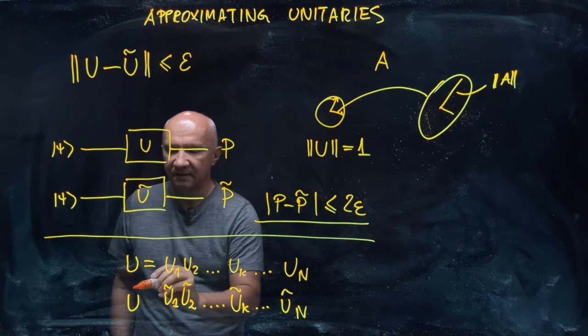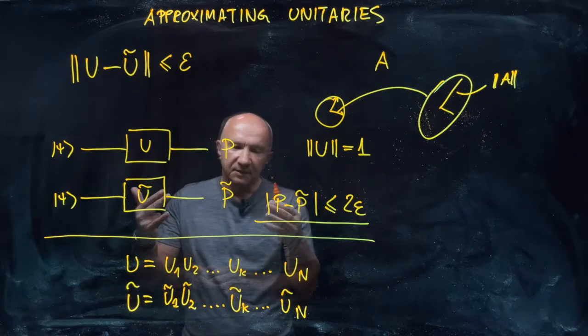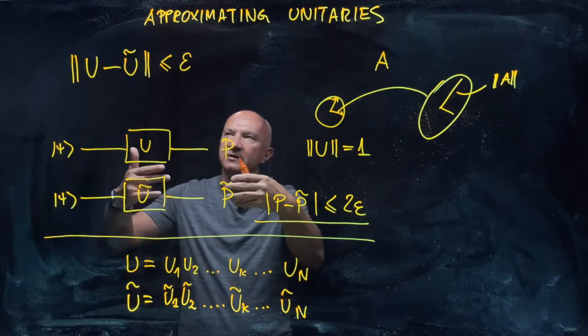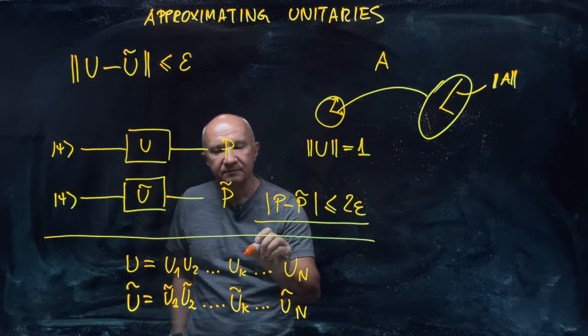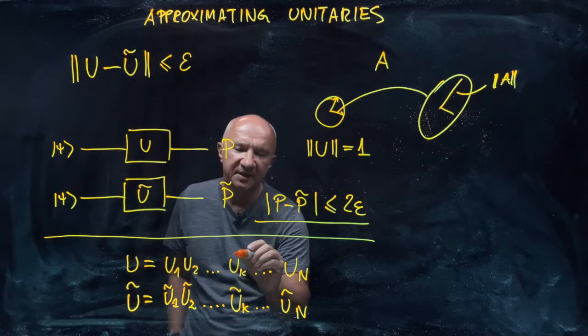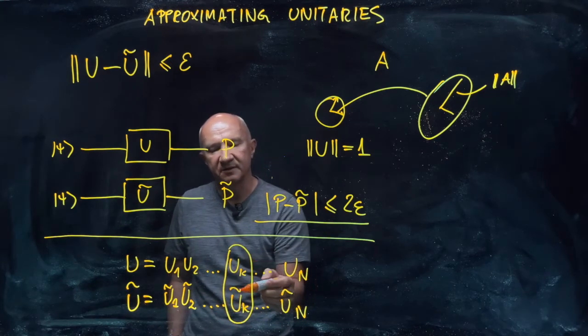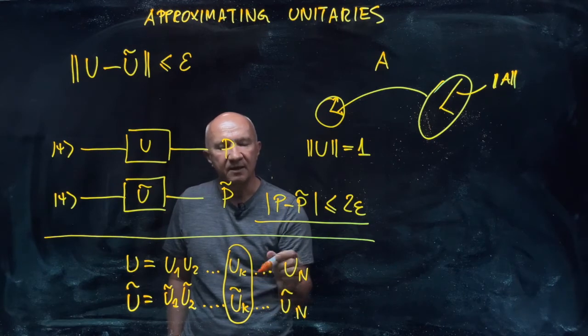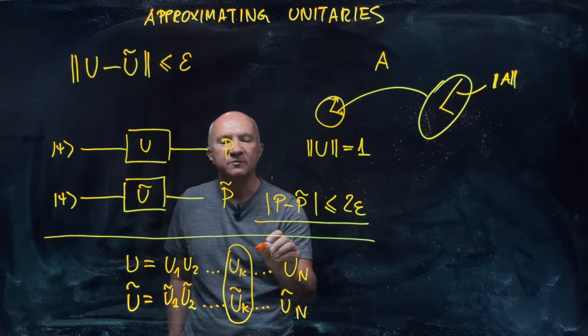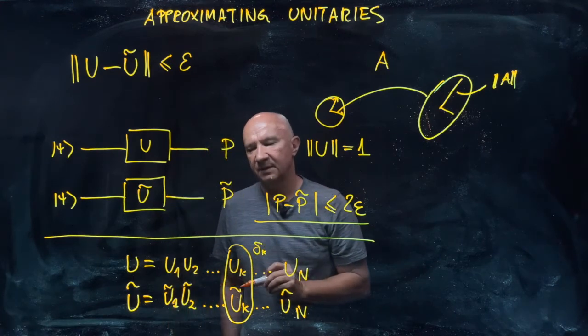So that's your unitary operator u tilde. You can then use the properties of the distance to show that if each approximation—so let's say that this approximation here, so that u tilde sub k and u k are at most delta sub k away from each other.